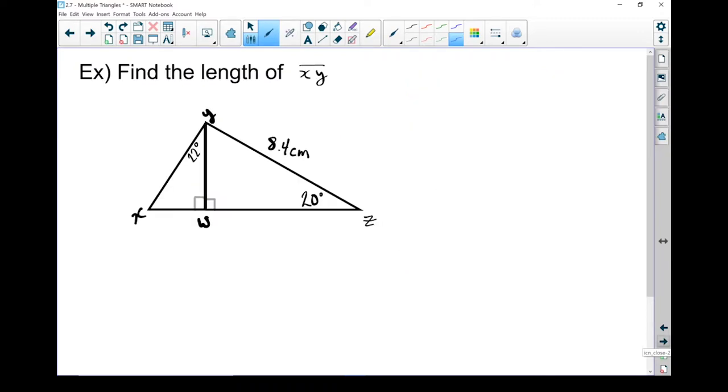Here's our first question. Find the length of side XY. So we're trying to find the length of this side right here. But when I look at that triangle, this triangle right here, I only know one piece of information. I only know this 22 degree angle. That's not enough information for me to solve that triangle. I need at least one side length.